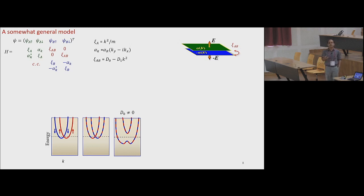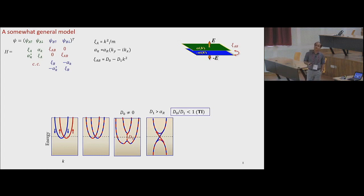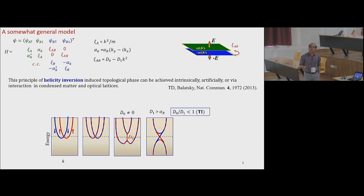There will be a simple tight-binding tunneling between the two layers, and the tunneling needs to be anisotropic — there is on-site tunneling and also nearest-neighbor tunneling. That turns out to be the Dirac mass, allowing you to open a gap. If you increase this tunneling larger than the spin-orbit coupling, the bands will be inverted. This is guaranteed to produce a topological phase. There is only one band inversion at the gamma point, which guarantees a topological insulator in any dimension. This is the helicity-inversion-induced topological phase.